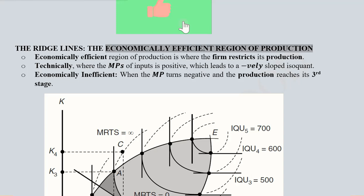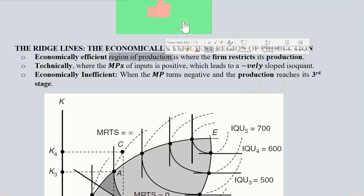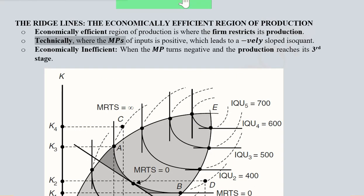Let us see with the help of this diagram how it happens, because we are interested in the economically efficient region of production where the firm would like to restrict its production. This economically efficient region is shaded in gray area, and the firm would like to produce in this area and not beyond it, neither to the left nor to the right, technically where the MPs of the inputs are positive.